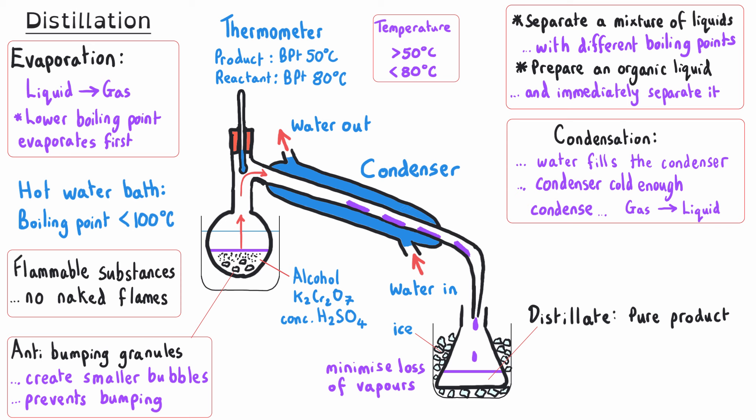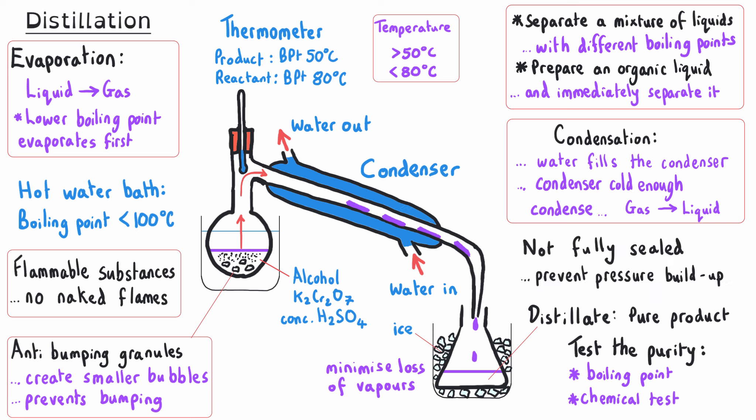Ideally the distillate would be a pure substance — 100% of the product we're hoping to get, without any reactant or other organic byproduct condensing along with our target molecule. We can test the purity of our product by measuring its boiling point to see if it is pure by looking for a sharp, specific boiling point. We can also do a chemical test to prove we have a specific functional group and confirm it isn't contaminated by an additional functional group.